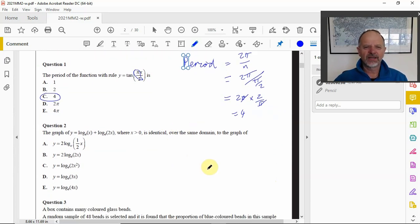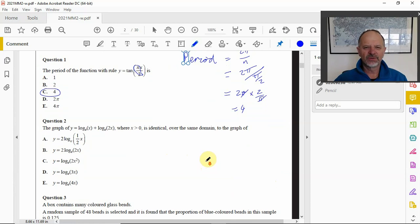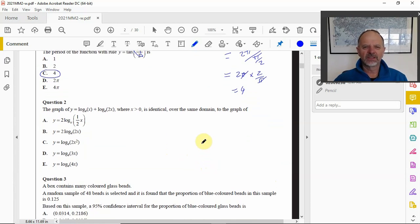This is identical over the same domain to the graph of one of those. Here we've got our options that have just got one log, so we need to use one of the log laws. If we're adding, our log laws say we take these two things and we multiply them together. So that would be log base e of x times 2x, so that's 2x².